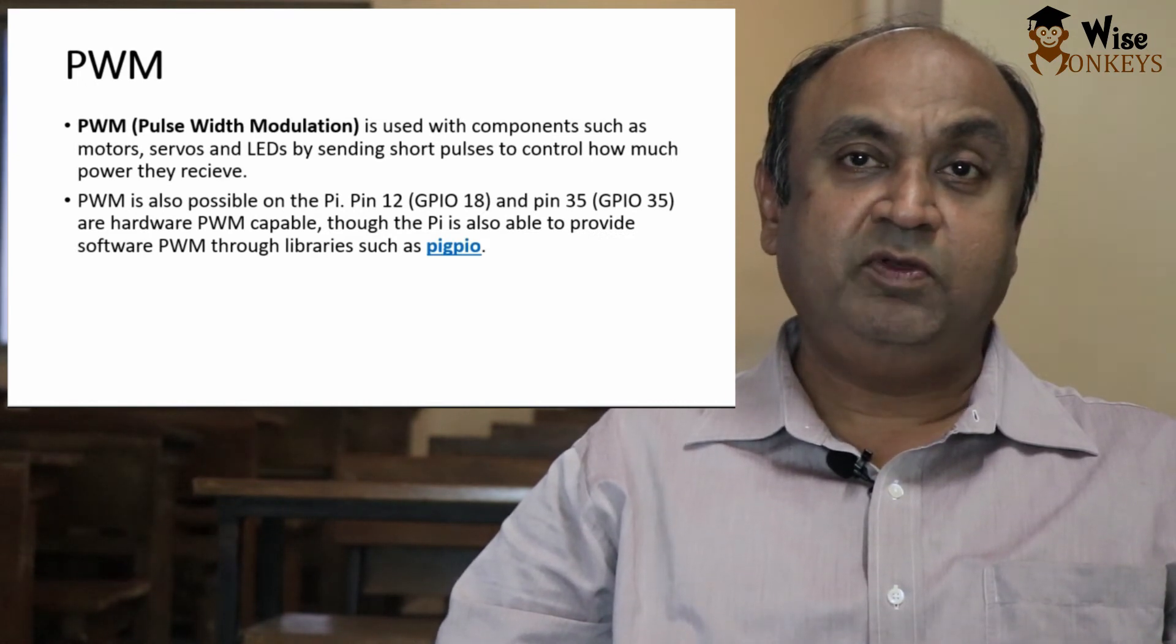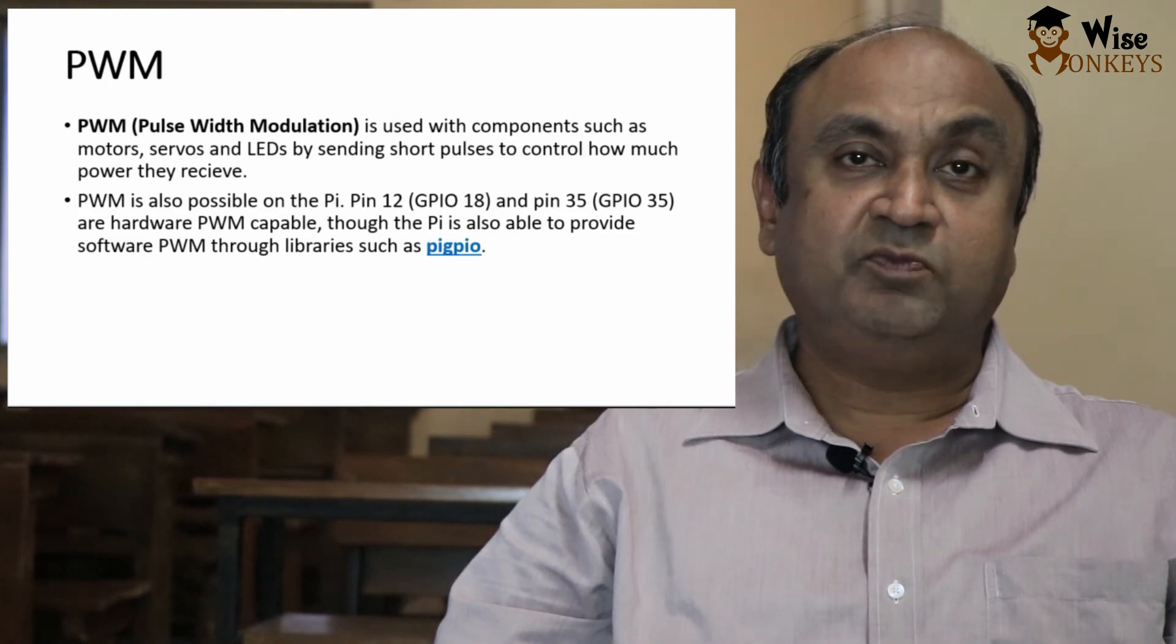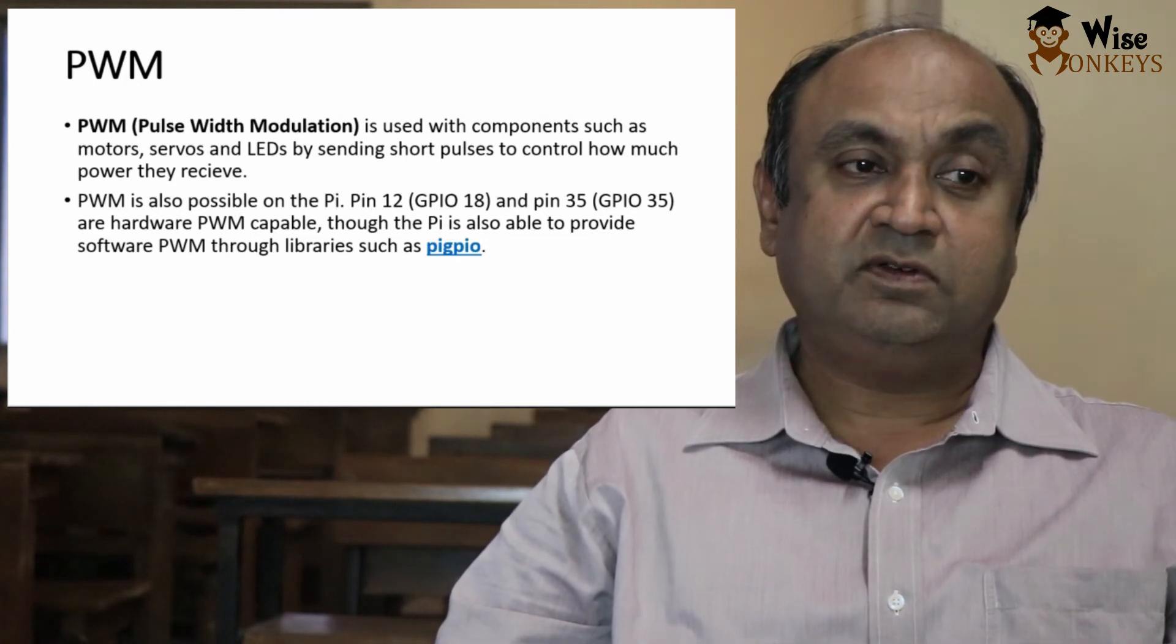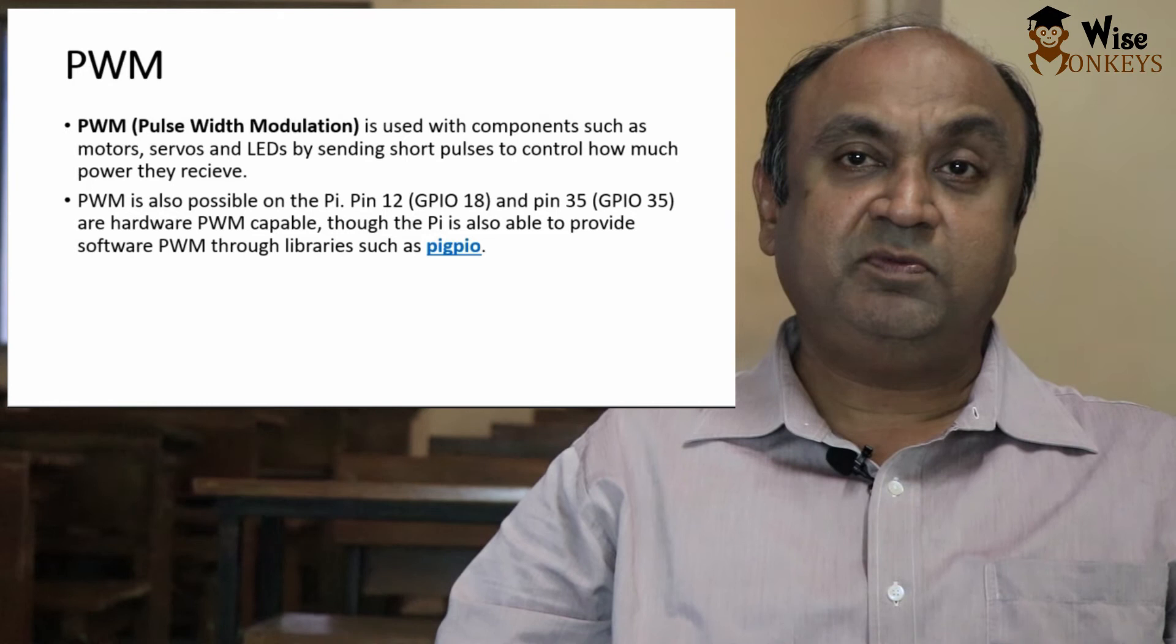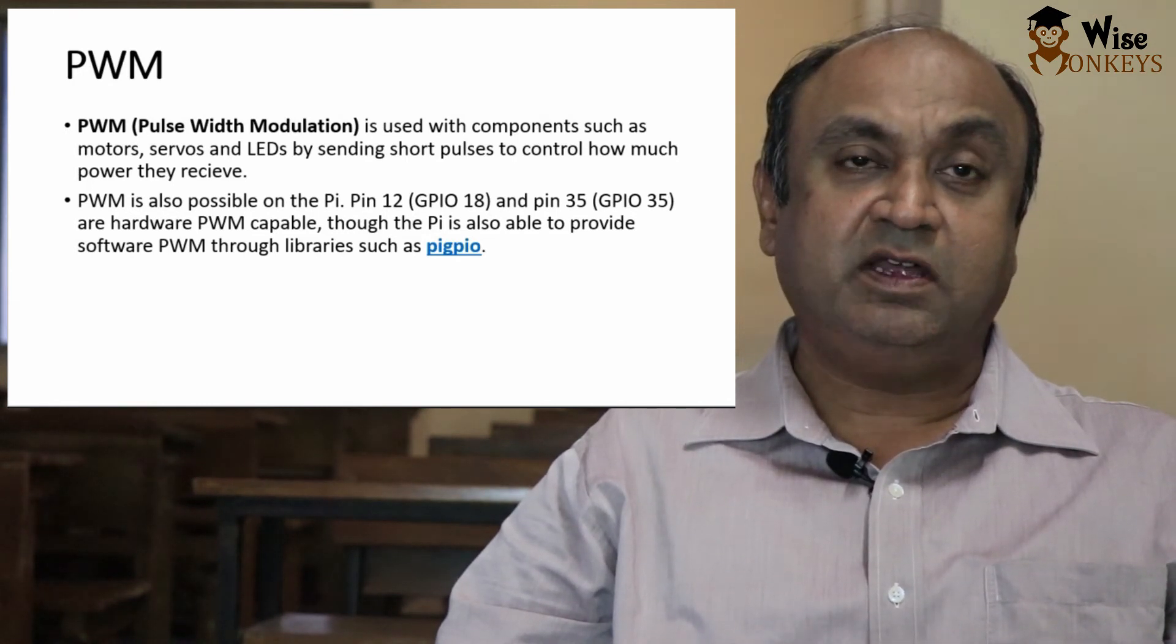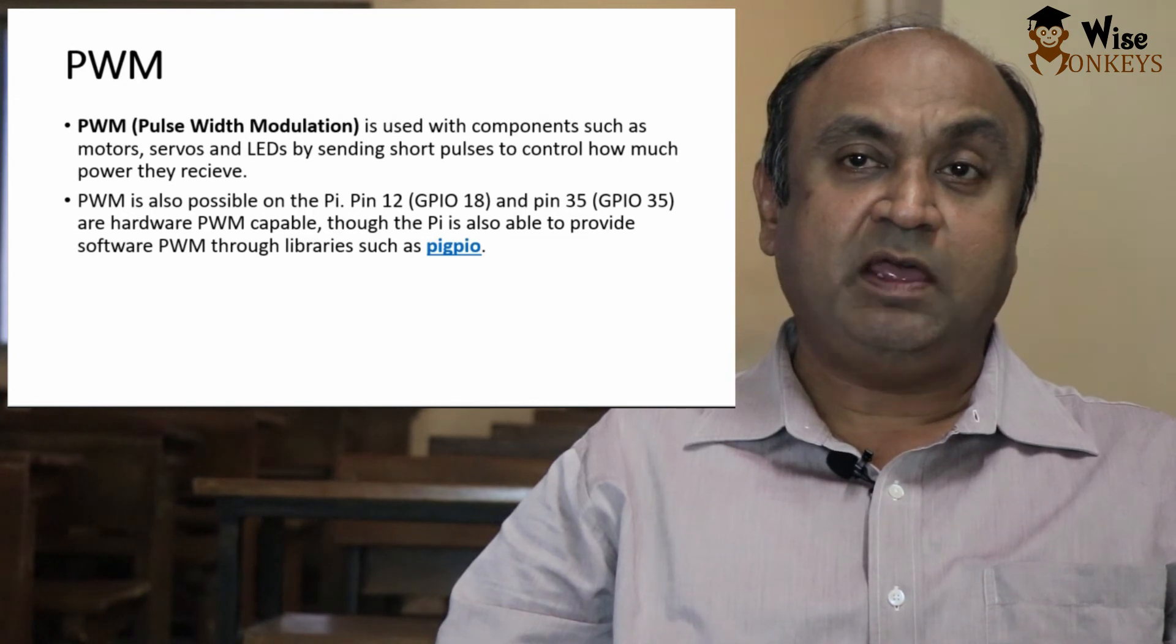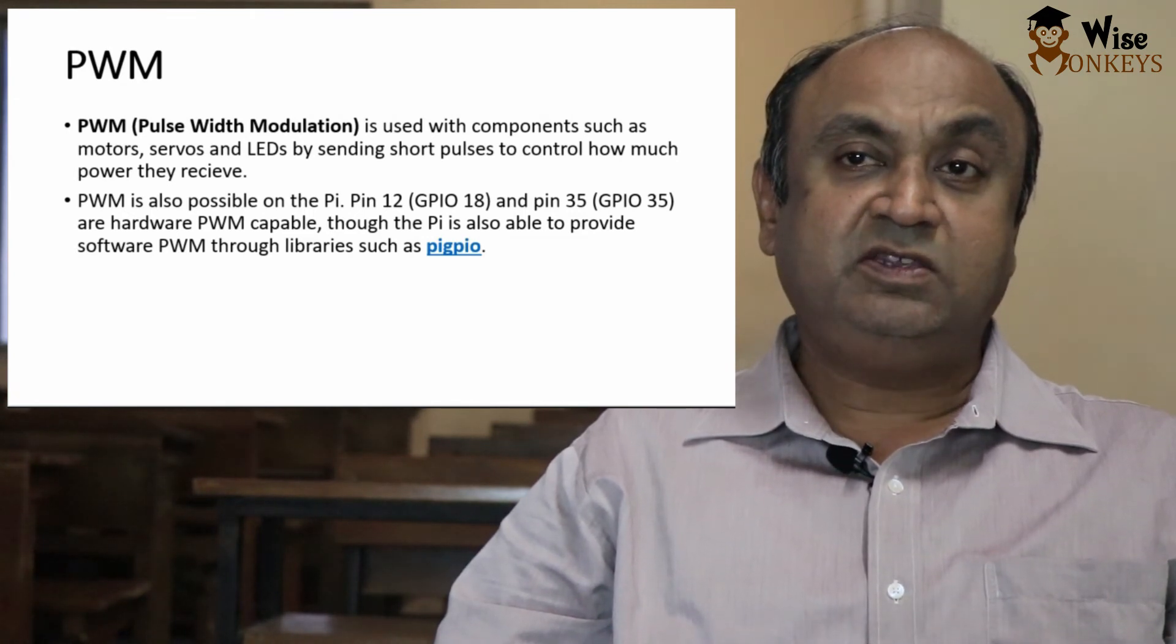Pulse width modulation. The PWM pins are used with components such as motors, servos and LEDs by sending short pulses to control how much power they receive. PWM is also possible on Pi, pin 12, GPIO 18 and pin 35, GPIO 35 are hardware PWM capable. Though the Pi is also able to provide software PWM through libraries such as Pi GPIO.